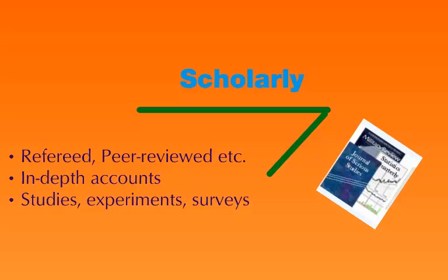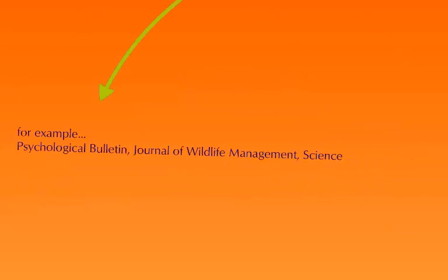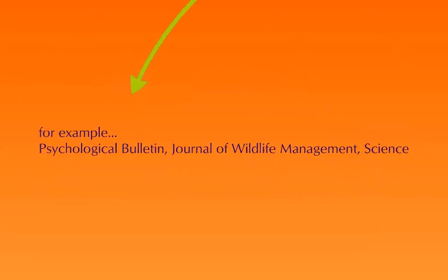So again, your instructor might say they want you to use scholarly sources for your paper, or they might just say peer-reviewed. That's what a scholarly source is all about. For example, Psychological Bulletin is a scholarly source, Journal of Wildlife Management is a scholarly source, and Science is a scholarly source — these are all different types of scholarly journals.